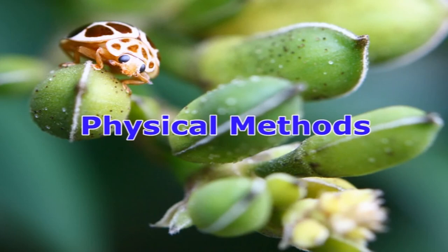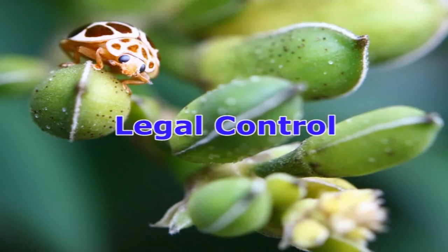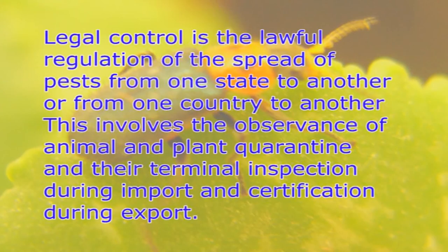Physical methods involve manipulation of temperature, humidity, and the use of radiant energies. These methods are particularly useful for destroying stored grain pests with the help of cooling, heating, and radiant energies like radio frequencies, infrared rays, visible light, ultraviolet rays, and ionizing radiations. Legal control is the lawful regulation of the spread of pests from one state to another or from one country to another, involving observance of animal and plant quarantine, terminal inspection during import, and certification during export.